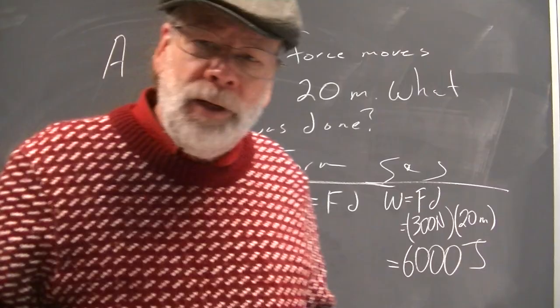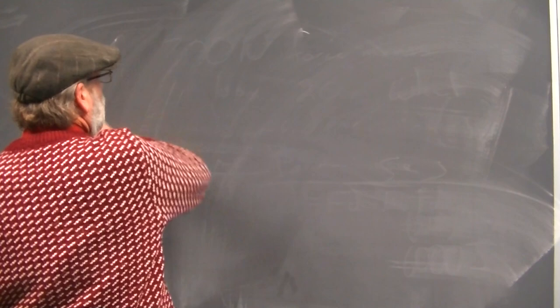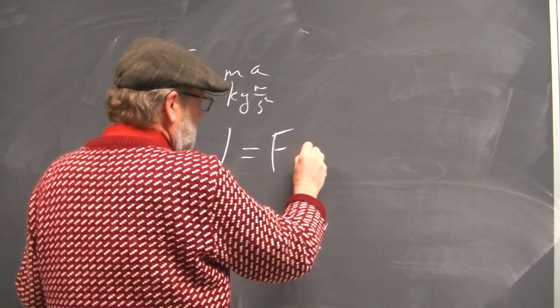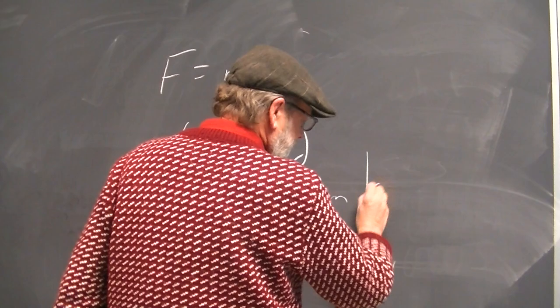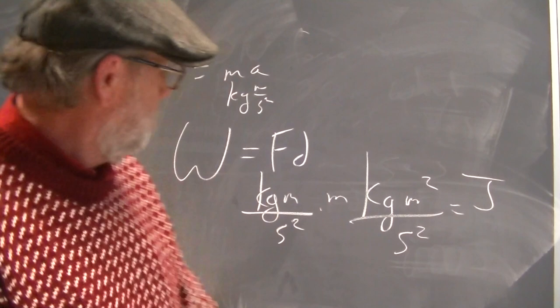So this is the idea of work — new unit called the joule. Let's look at the base unit of a joule. Force equals mass times acceleration, that's a kilogram meter per second squared. And if work equals force times distance, this is then a kilogram meter per second squared multiplied by a meter. So we end up with kilogram meter squared per second squared — that equals a joule. Those are the base units of work.